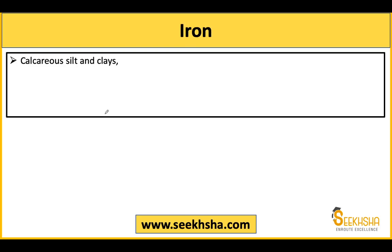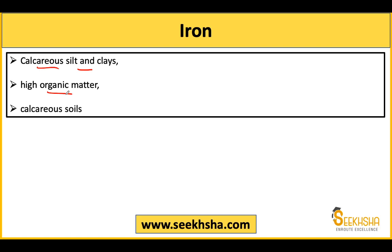For iron deficiency, you will see it in clay soils where organic matter is very high. Interestingly, when organic matter is less, you see nitrogen deficiency — but iron deficiency can also arise when organic matter is less. Calcareous soils can also lead to iron deficiency and other nutrient deficiencies as well.